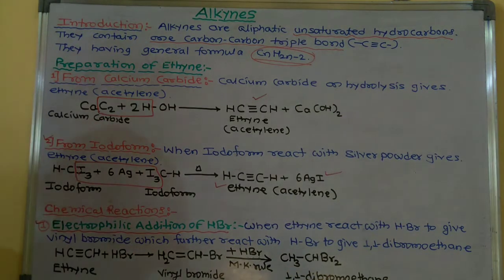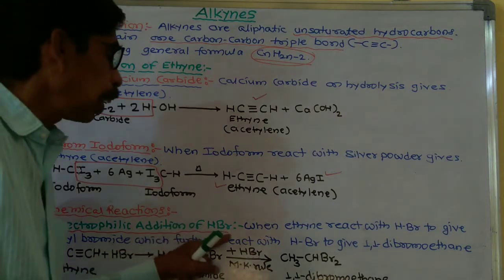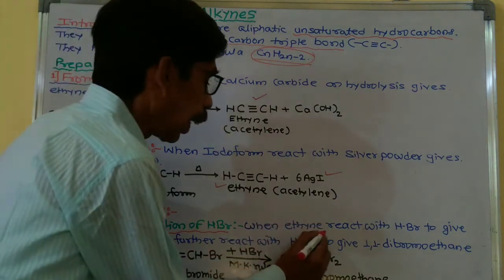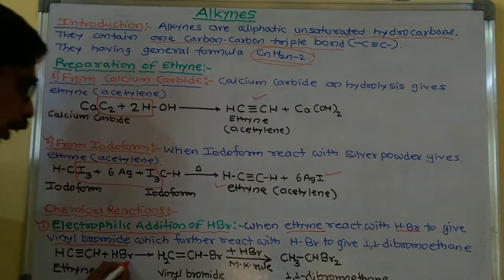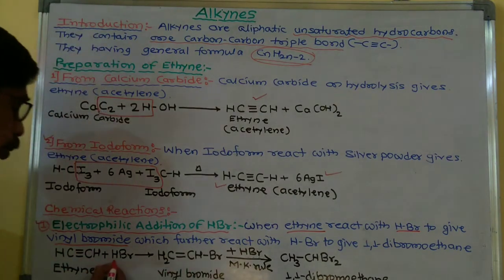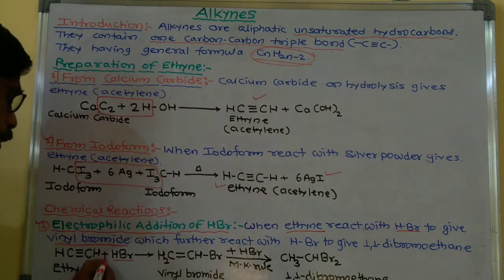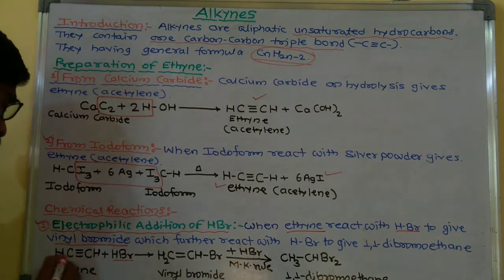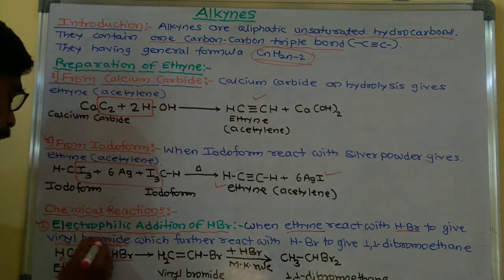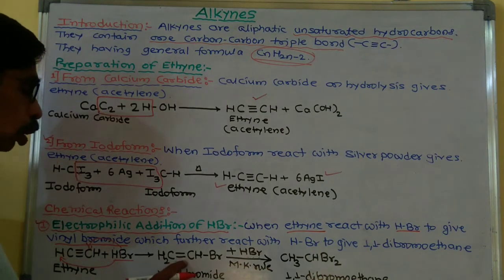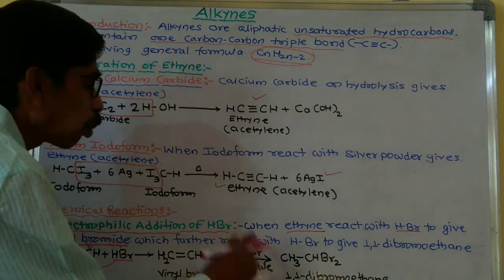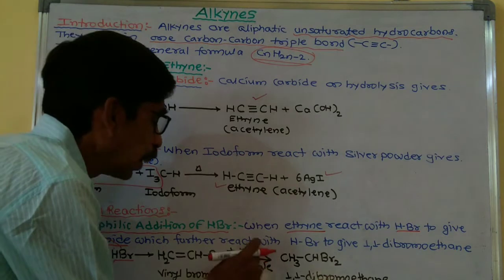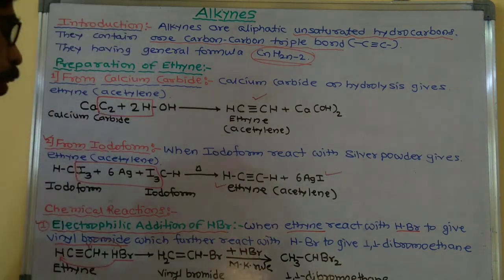The next part is the chemical reactions. The first chemical reaction: the electrophilic addition of HBr. Now this is the electrophilic addition of HBr to ethyne. When ethyne reacts with HBr, we get first vinyl bromide. From HBr, the H is linked with one CH and the Br is linked with the other CH to give CH2=CHBr.